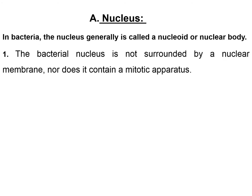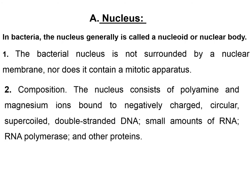The nucleus structure in bacteria: in bacteria, the nucleus is called the nucleoid or nuclear body, because there is no nuclear membrane around the genetic material. The composition of the nucleoid consists of polyamine, magnesium ions — which bind to the negatively charged phosphate groups in the DNA structure — and it is circular, like a ring, and supercoiled, meaning many circles folded onto each other.